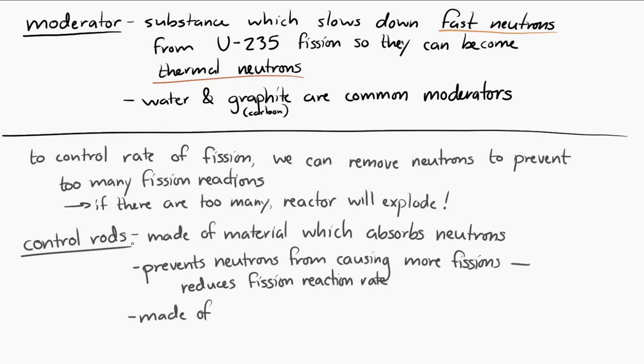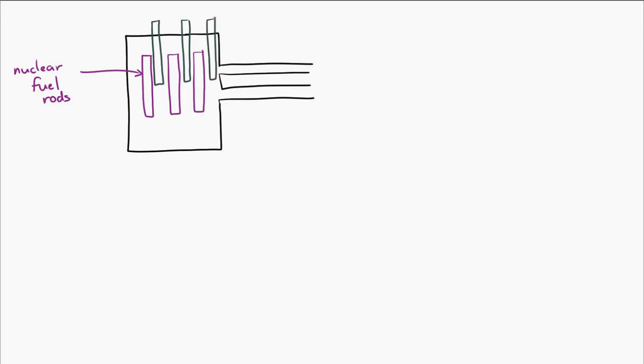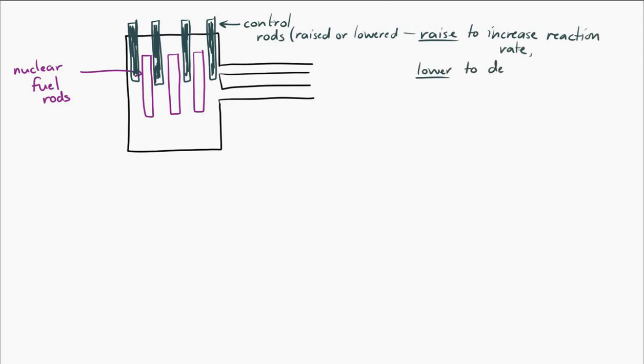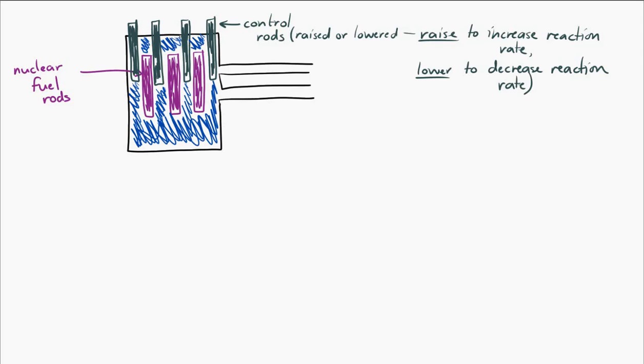So, I'll draw a little diagram of a nuclear reactor right here. Here's the nuclear fuel, where the fission happens. And here's the control rods. And the control rods are usually designed so that they can be raised and lowered. And if they're raised, if they're taken out of the reactor, then that will increase the reaction rate, because now you're not going to absorb as many neutrons. There will be more neutrons flying around to cause more fission reactions. If you lower the control rods into the reactor, if the control rods are more in the reactor, then the control rods are more able to absorb neutrons, and the reaction rate will decrease.